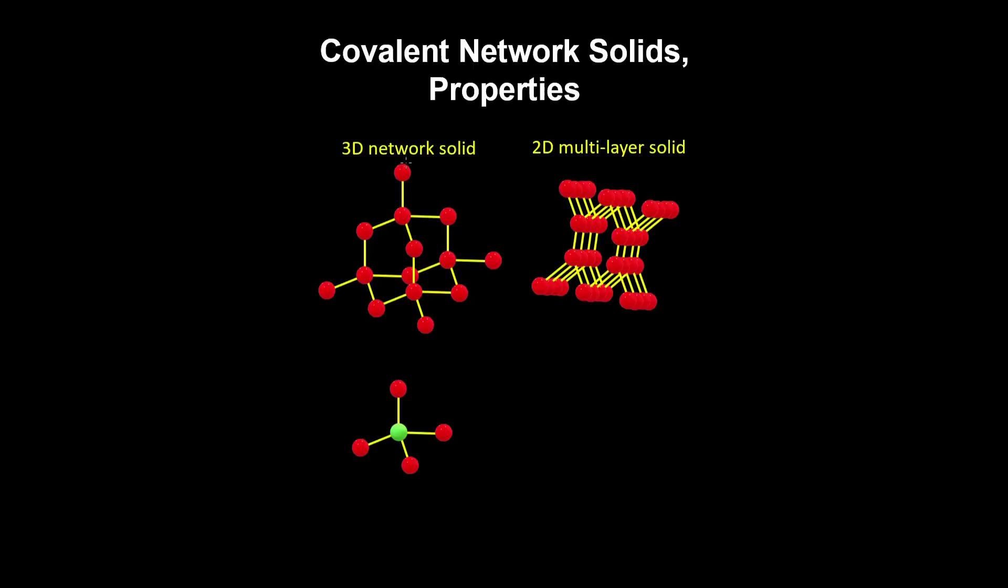In covalent network solids, the atoms can be covalently bonded together in a 3D network, like diamond for example, where one carbon atom is bonded to four others in a tetrahedral arrangement.